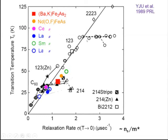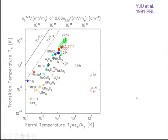We have now converted this horizontal axis into the energy scale of superconducting carriers, because NS/M* is very closely related to the Fermi energy. In this plot, made in 1991 and since, we converted the superfluid density explicitly into the two-dimensional Fermi energy — or with other parameters, the three-dimensional Fermi energy — as the superconducting charge energy scale on the horizontal axis, and TC on the vertical axis.